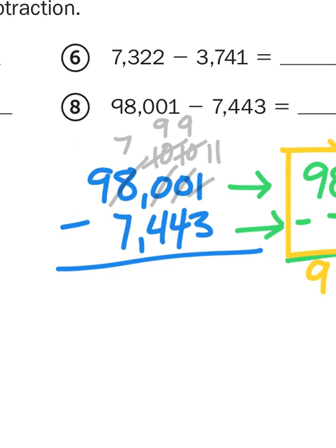11 minus 3 is going to give me 8. 9 minus 4 is 5. 9 minus 4 is 5 again. 7 minus 7 is 0. And then I bring down the 9, which gives me an answer of 90,558.